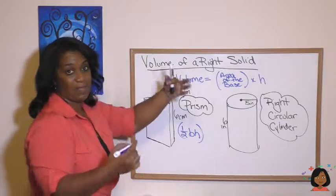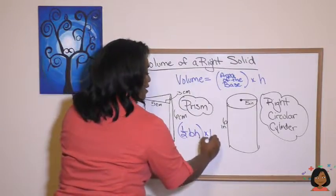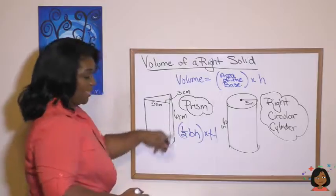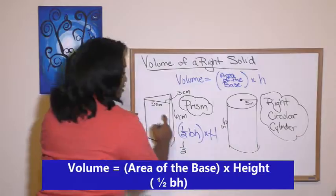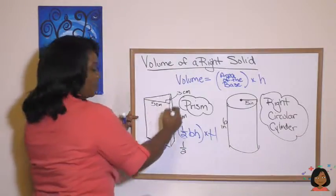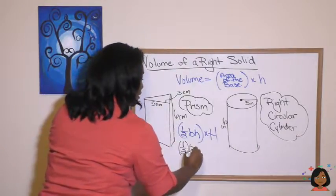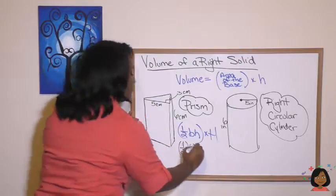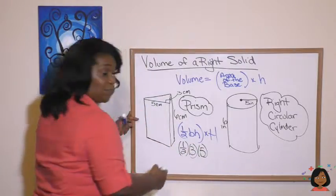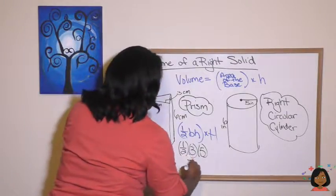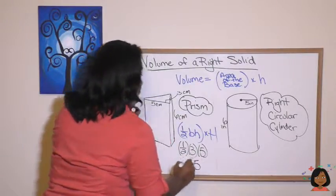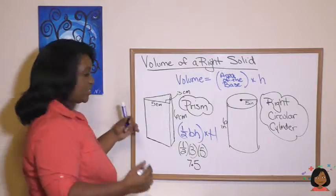And then we're going to multiply this whole thing times, I'm going to do a big H for the big height. Let's do it. One half times the base, our base is 3. Our height is 5. Let's figure that part out. 5 times 3 is 15. Half of that is 7.5 times the big height, which is 6.